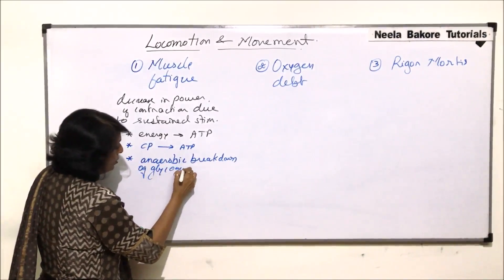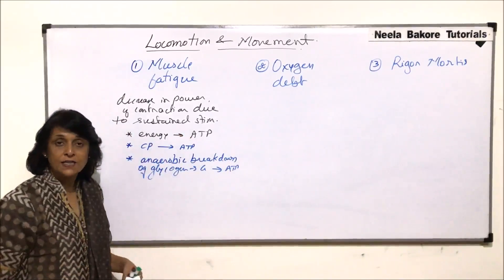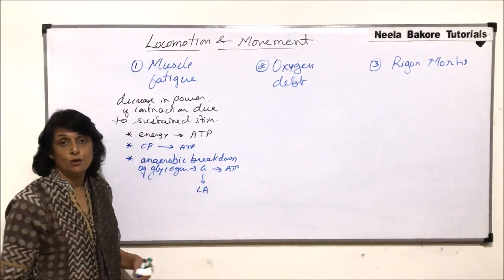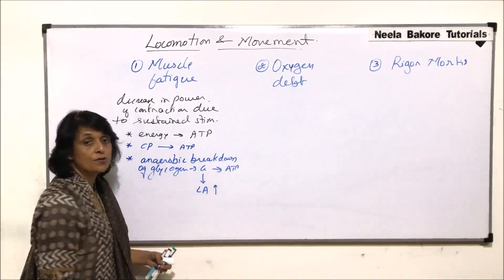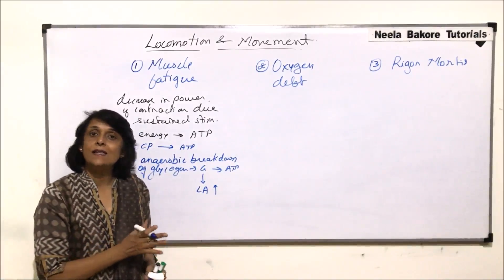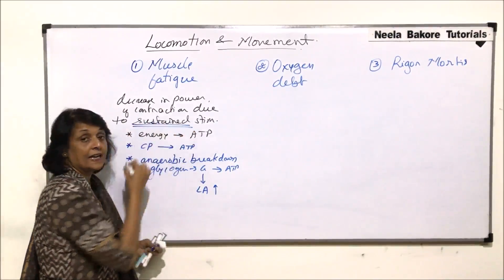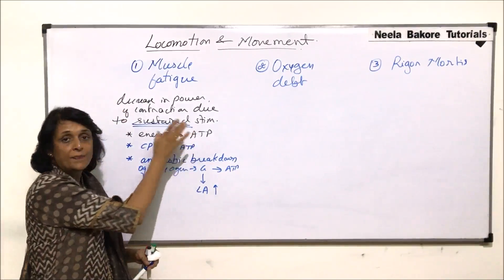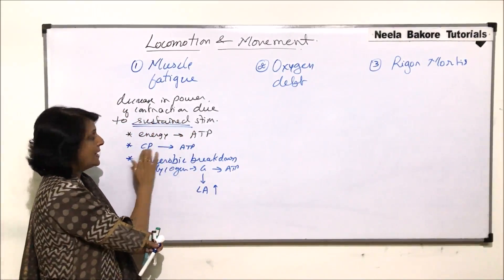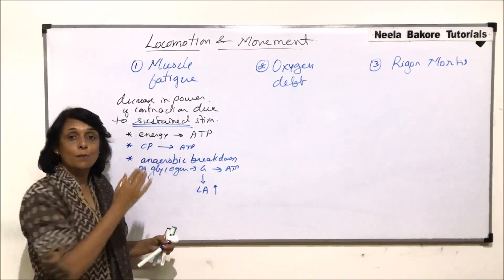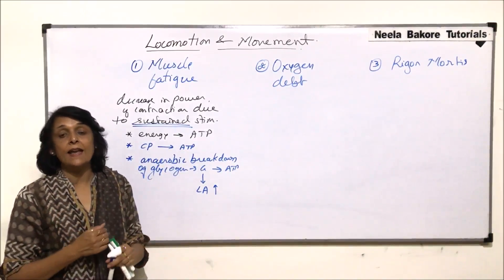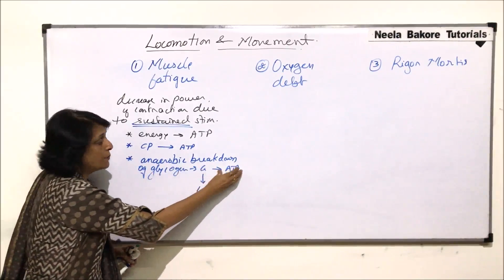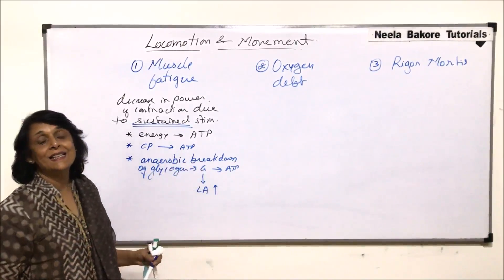If the muscle is still in the contracted state and ATP requirement is continuous, then anaerobic breakdown of glycogen or glucose takes place. Glycogen is broken down to glucose, and ATP generation occurs. The second phosphagen, creatine phosphate, helps in ATP production, and if energy requirement continues, anaerobic breakdown takes place.